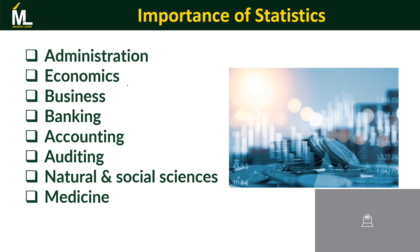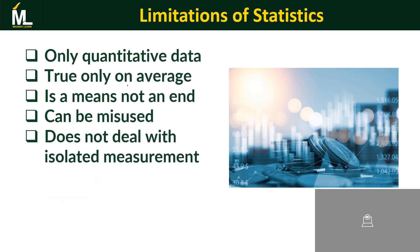In accounting, which involves recording, collecting, presenting, summarizing, and reporting data, we need statistical data to do this in terms of financial statements. In auditing, it helps us generate samples — we look at sampling in this paper to understand why auditors need samples. In natural sciences, it helps us understand things medics look at in order to come up with conclusions about specific patients. Medicine is quite similar to natural and social sciences.